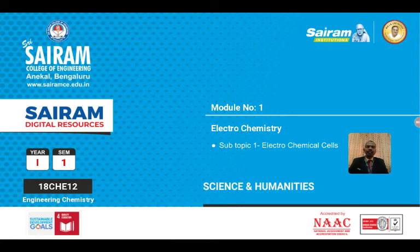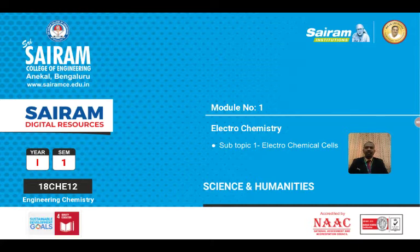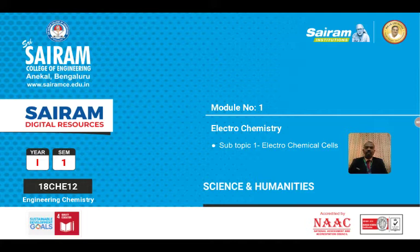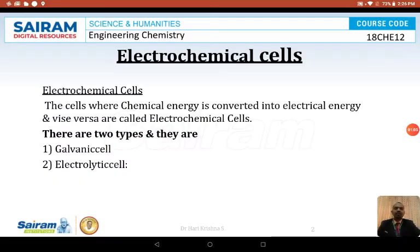Good morning. Today we're going to discuss a new module: electrochemistry. Electrochemistry is the branch of chemistry which deals with electrochemical cells, especially redox reactions. Most of you might have studied this in your plus one or plus two. Electrochemistry involves the loss — that is oxidation — and gaining of electrons. We will discuss electrochemical cells, oxidation, reduction, free energy, and entropy.